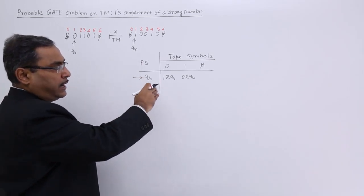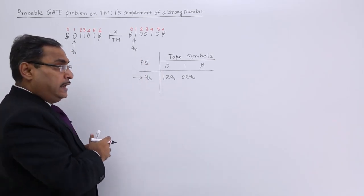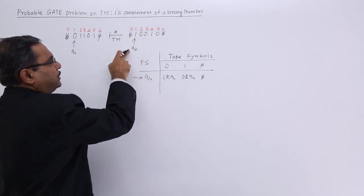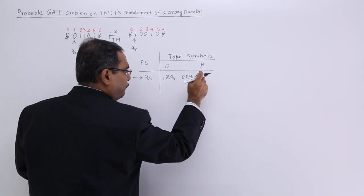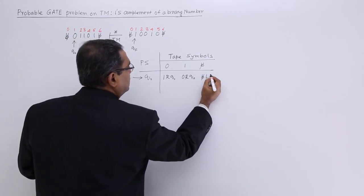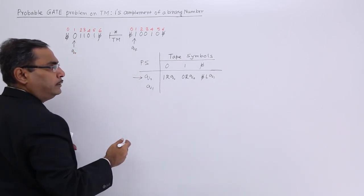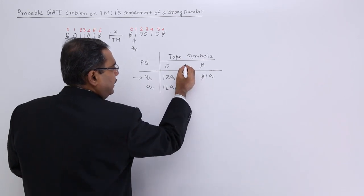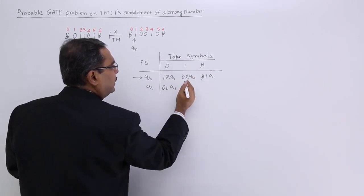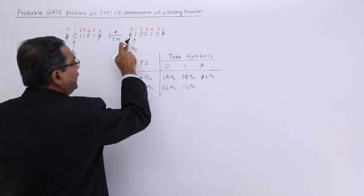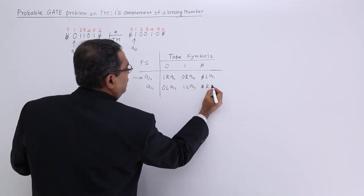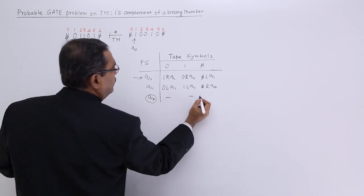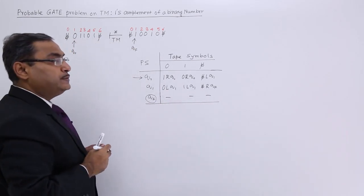It will keep moving towards the right and 1 will be replaced by 0. If it gets a blank space, after getting that blank, I should return back, so I put this one at state Q1. If I get a blank, it will go blank, move left, and go to Q1. In Q1, it will just pass through the converted string — 0 left Q1, 1 left Q1. If Q1 gets a blank, then it goes blank R to QF, which is my final state. I am not going to define any transitions there, so the machine will halt.